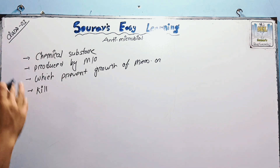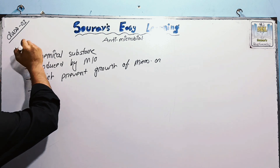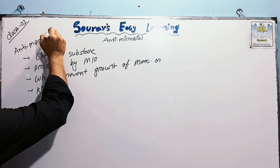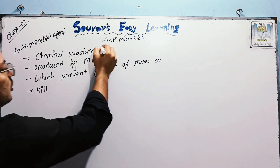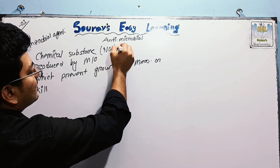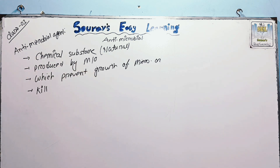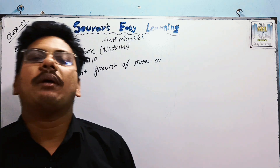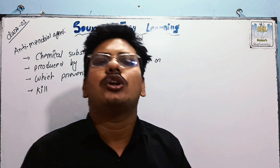That is why we say antimicrobial agent. An antimicrobial agent is a natural chemical substance which is produced by a microorganism and which prevents the growth of other microorganisms. That is why the microorganisms do not overgrow — you usually see all these microorganisms kept in check.